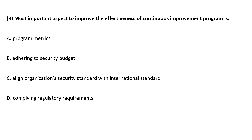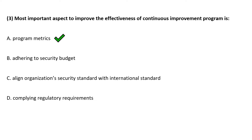Most important aspect to improve the effectiveness of a continuous improvement program is. Correct answer is option A, that is program metrics.